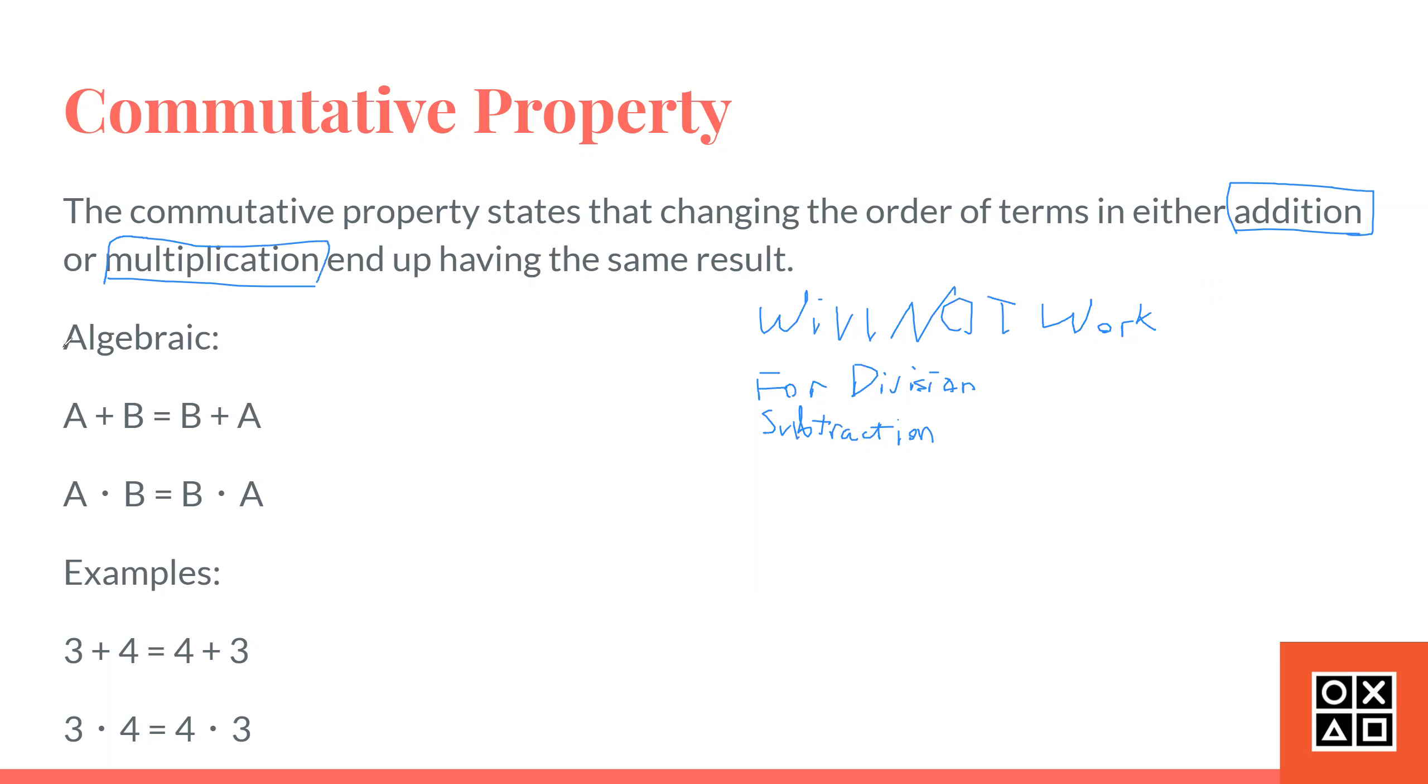We can show the commutative property algebraically. Basically, in algebra, there are these things called variables that just represent numbers. We'll be talking more about variables in Unit 2 of our Algebra course. So, A plus B equals B plus A.